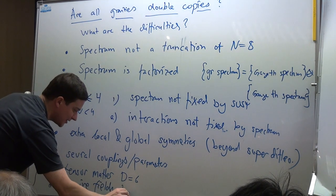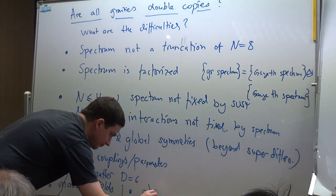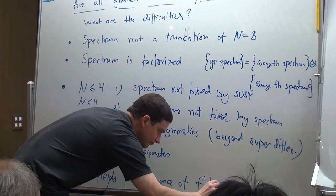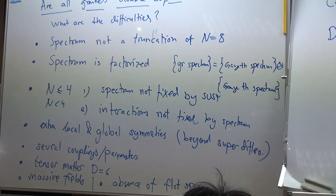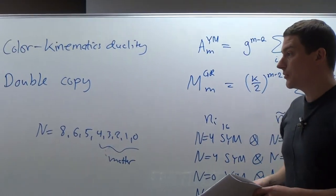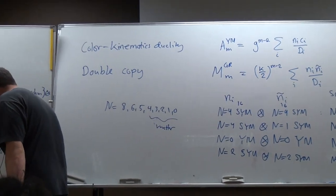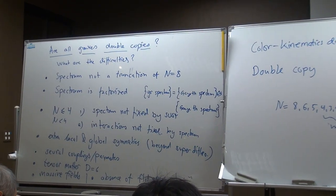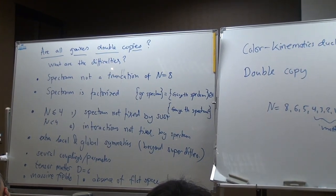There could be massive fields — that goes back to having more than one coupling, because you can think of mass as a coupling. The last point is there could be absence of flat space: some gauged supergravities don't have a flat space vacuum, they have an AdS space, and since we're talking about scattering amplitudes, we don't really know what to do. So these are just a few of the problems.